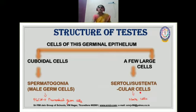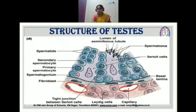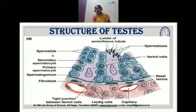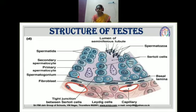This is about the cells of our germinal epithelium — it consists of spermatogonia and Sertoli cells. In spermatogenesis, first there is a formation of primary spermatocytes by mitosis, then meiotic division forms secondary spermatocytes, spermatids, and finally sperms. We will see this in detail under spermatogenesis. These are the cuboidal cells — our spermatogonia.